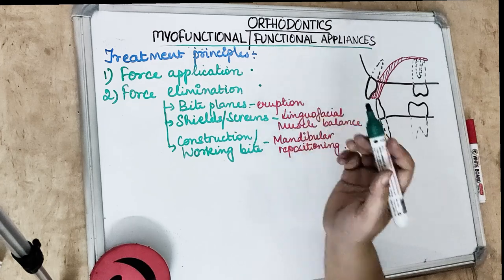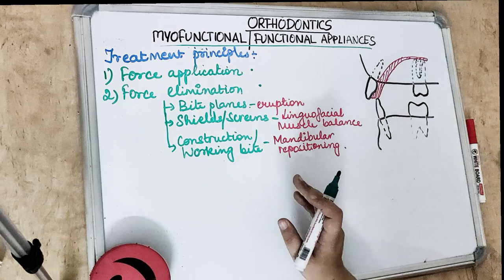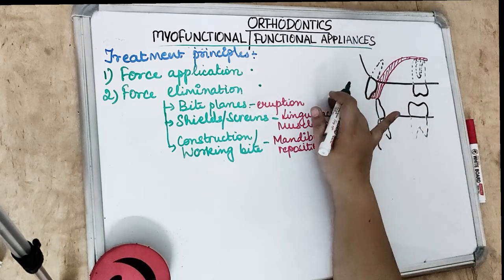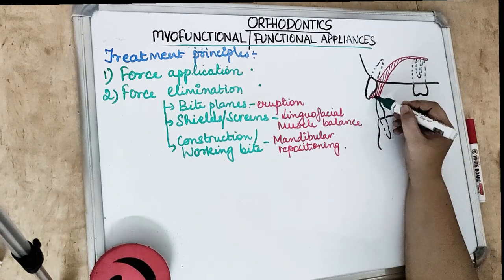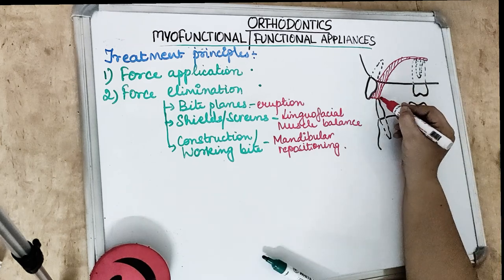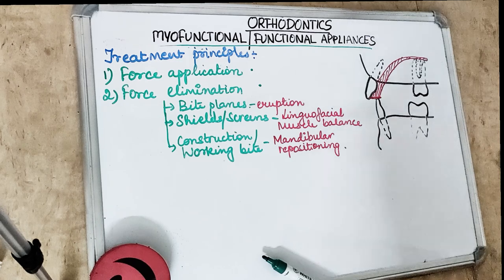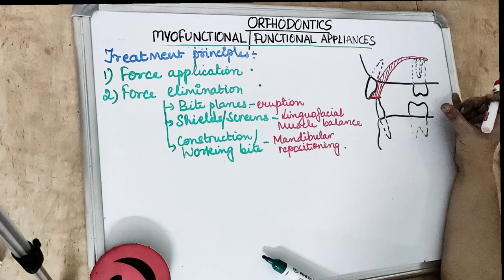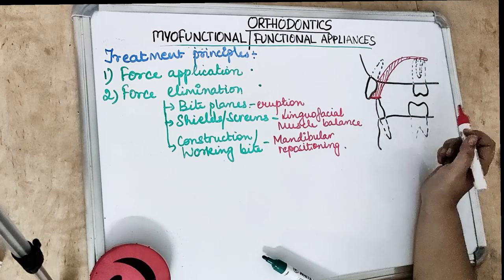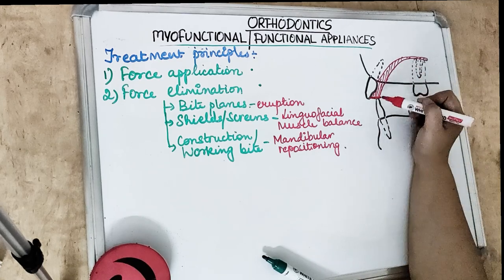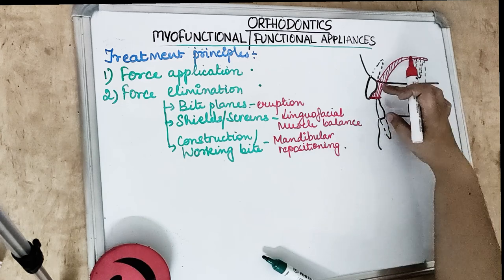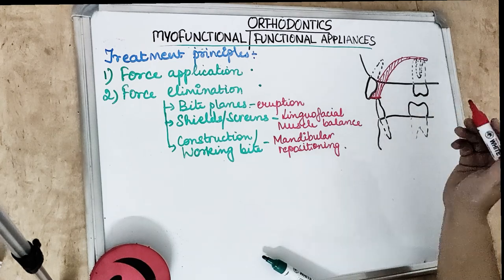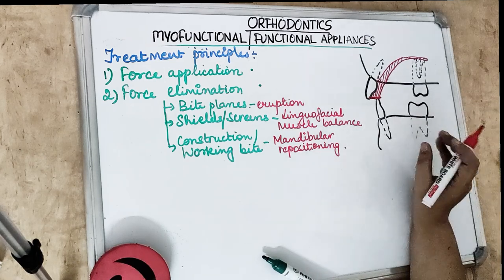Currently used appliances are made up of a combination of three basic functional components: bite planes, shields or screens, and the construction or working bite. These components produce skeletal as well as dental-alveolar changes. A bite plane is a flat or inclined surface present in either the anterior or posterior region, and it works by disoccluding the teeth.